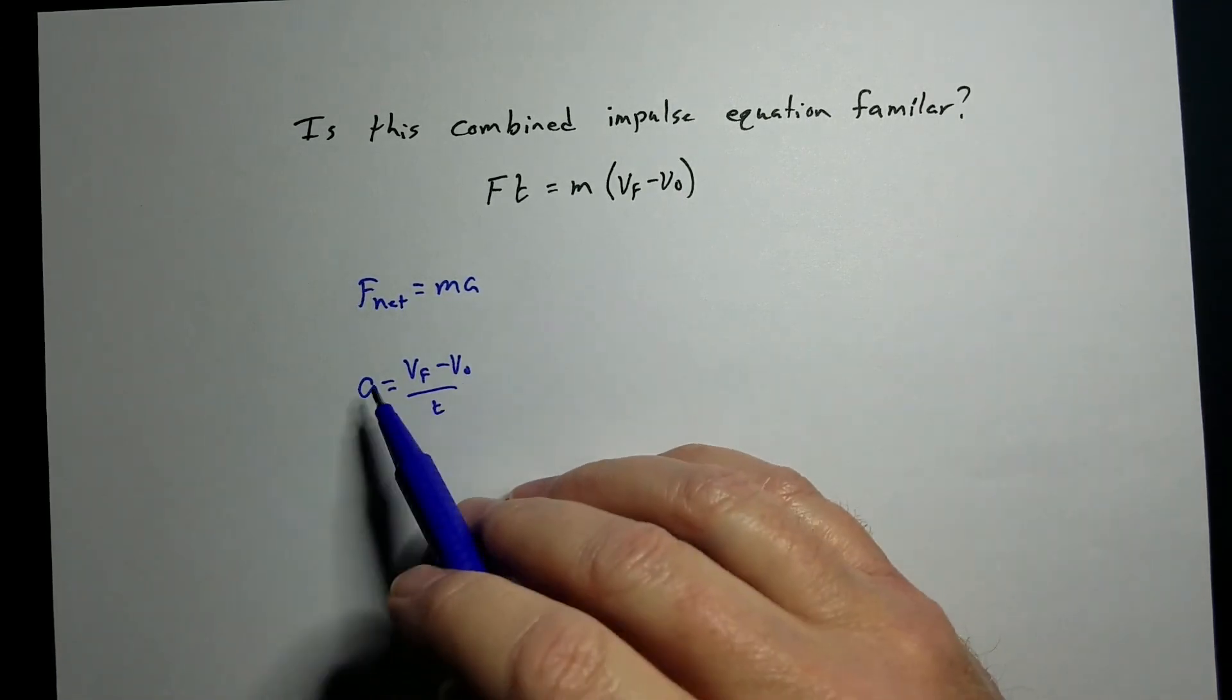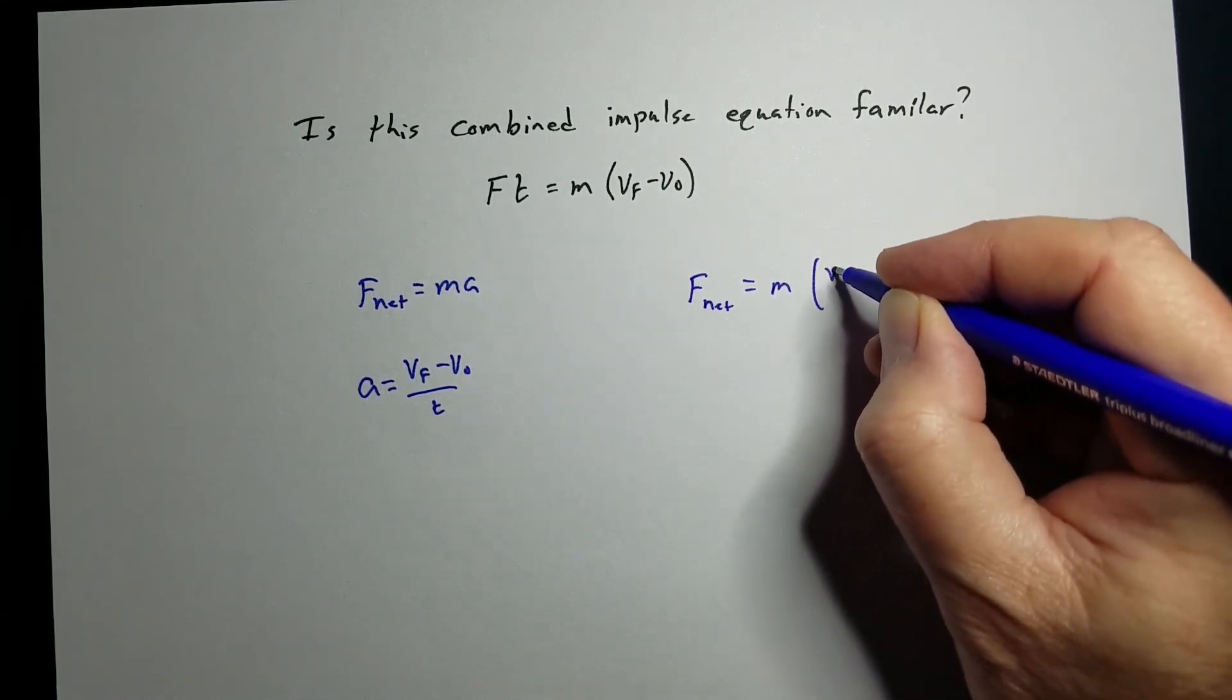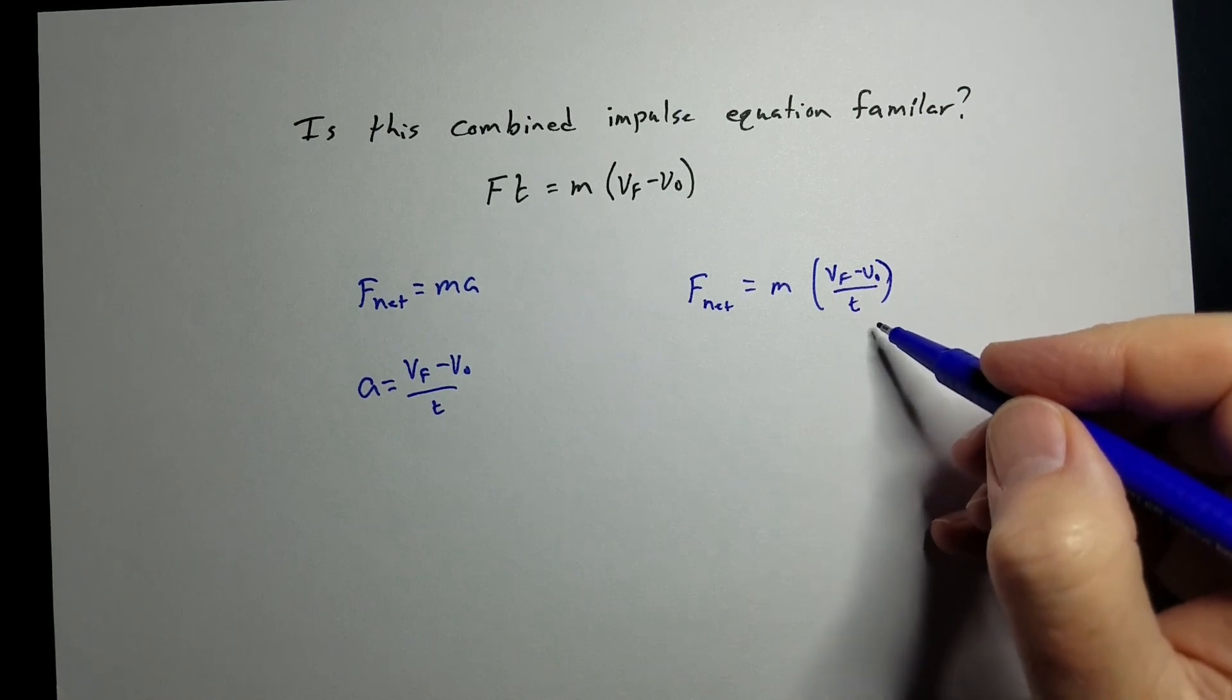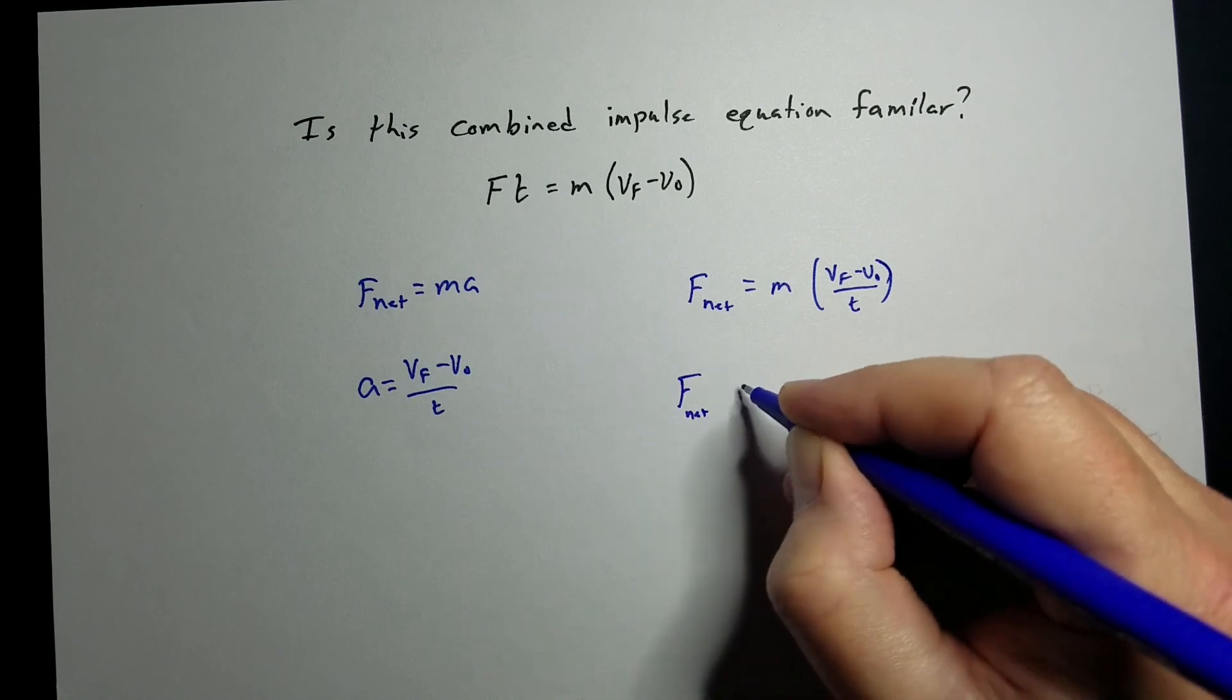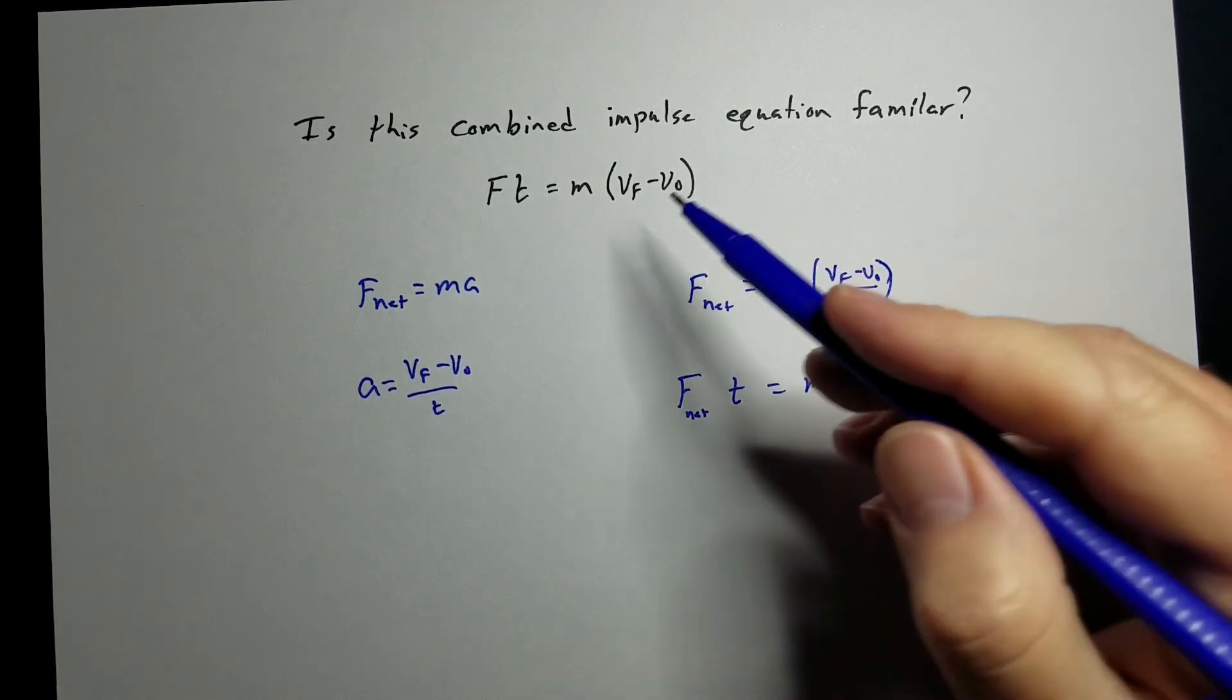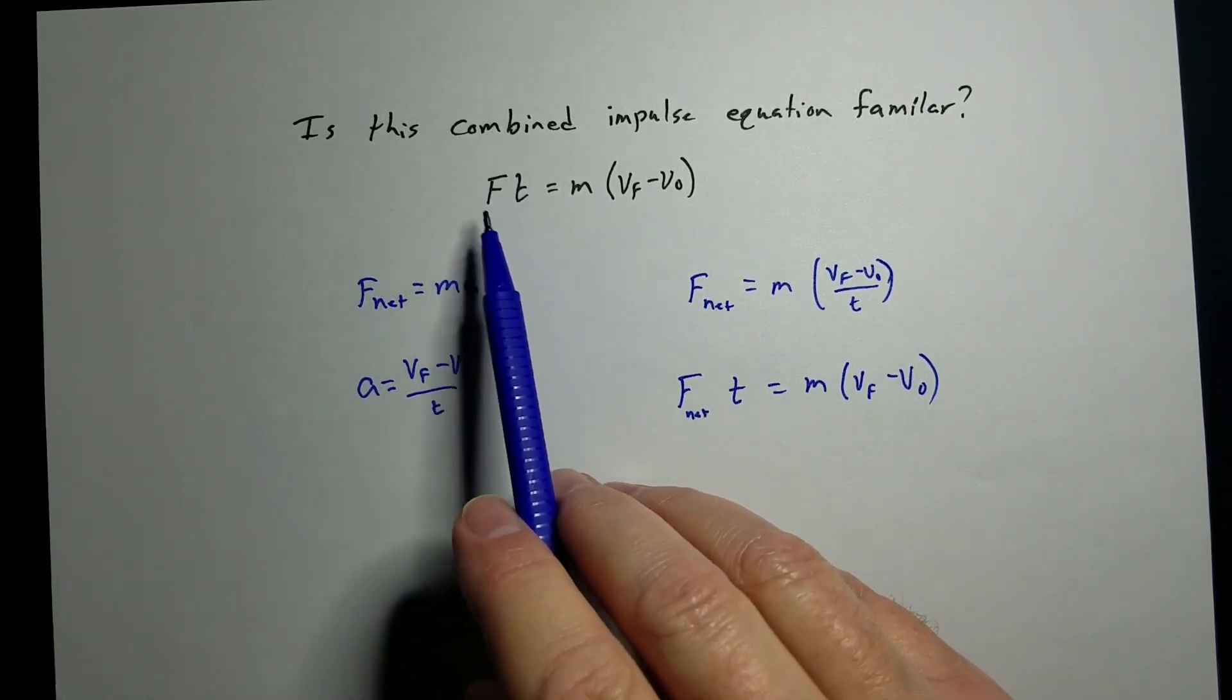Well, what if we combine these two? Substitute that into there. So, we've got Fnet equals M Vf minus V0 over T. And then, let's clean this up a little bit. Move the T over. So, our Fnet times T equals M Vf minus V0. And so, we get the same equation. We've got to remember that this is actually the net force applied to the object. Not any specific force, but the net force.